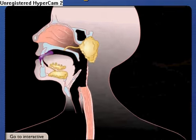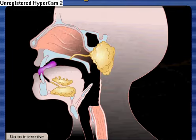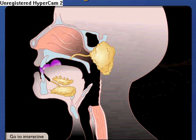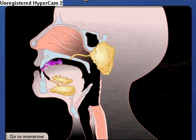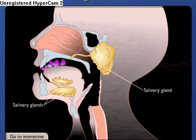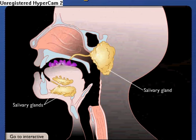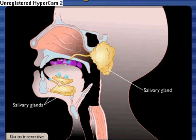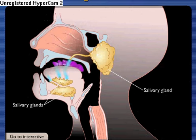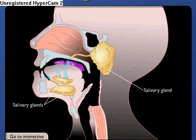Digestion begins in the mouth, where the teeth break food into smaller particles during mastication. Salivary glands, located near the oral cavity, secrete saliva, which begins chemical digestion and keeps the food moist.